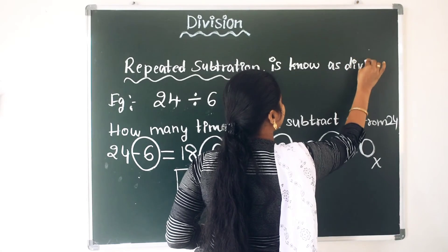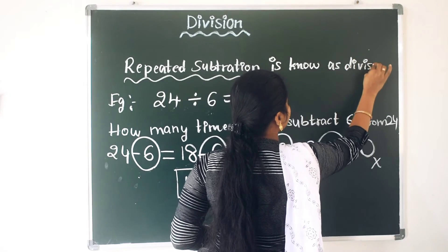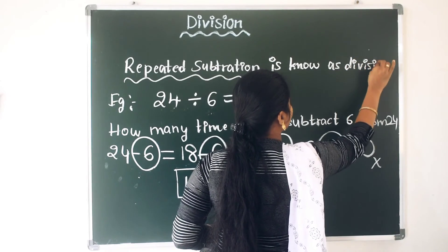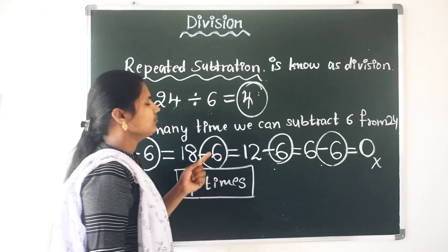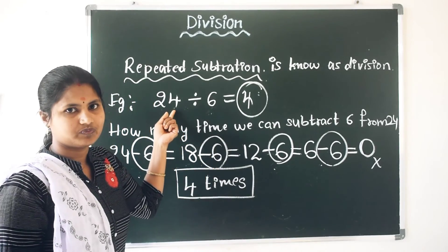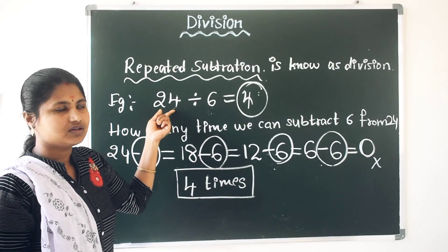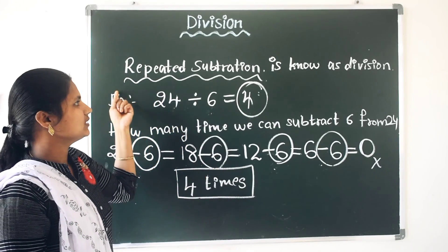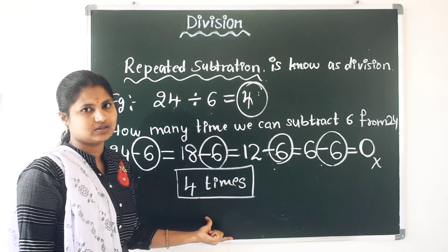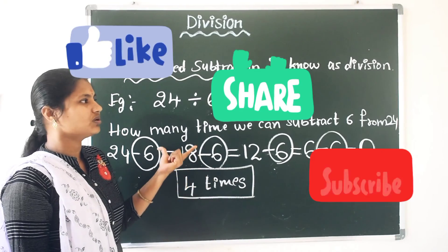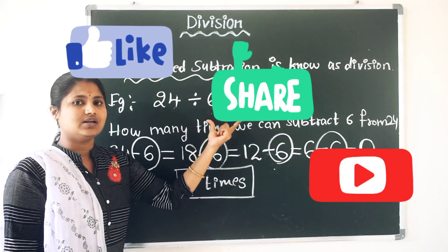We have subtracted the same number repeatedly from 24. So this is nothing but repeated subtraction. Repeated subtraction is known as division.